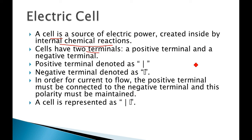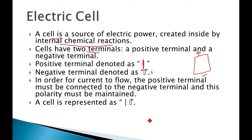Now a cell has two terminals. Suppose this is your cell — here we have a positive terminal and here we have a negative terminal. In a diagrammatic representation, we use a bigger line to show the positive terminal and a smaller line to show the negative terminal. So the bigger one is your positive terminal and the smaller one is the negative terminal.